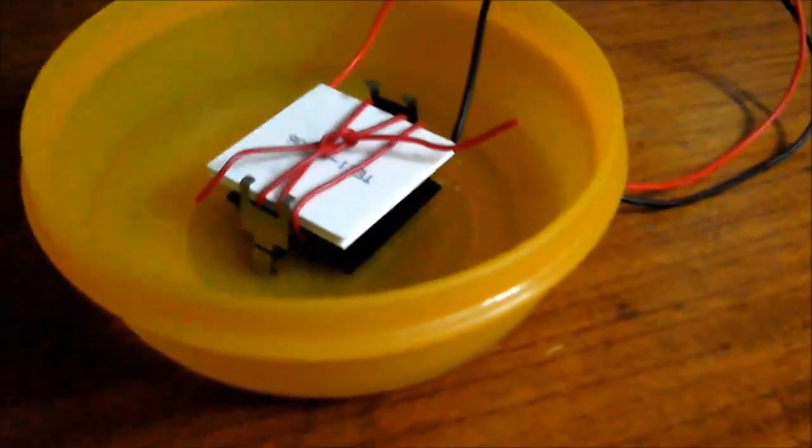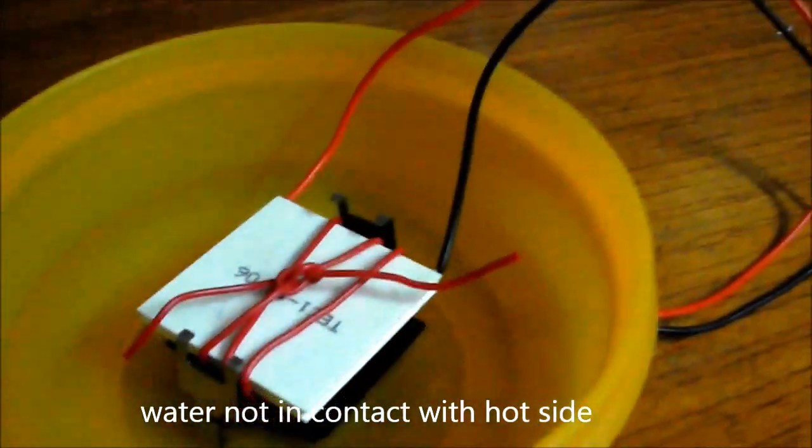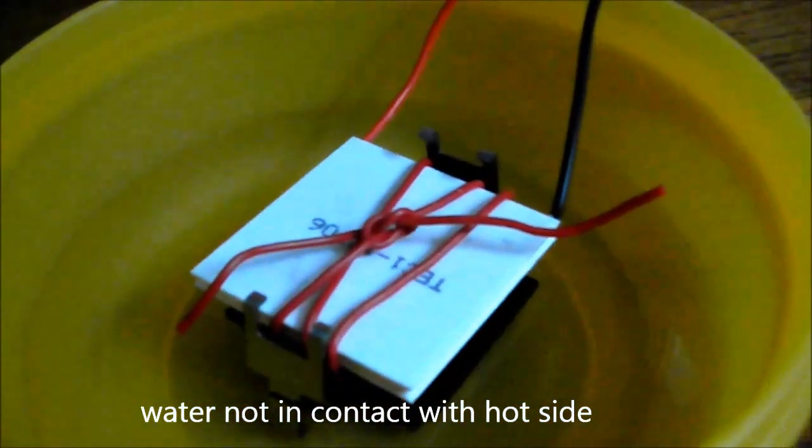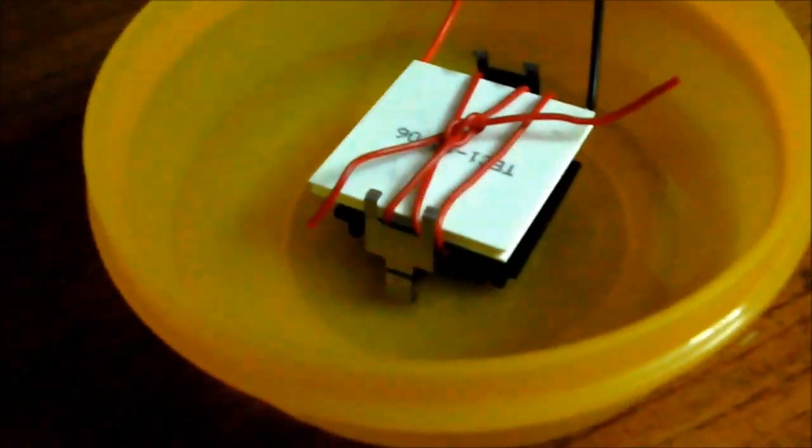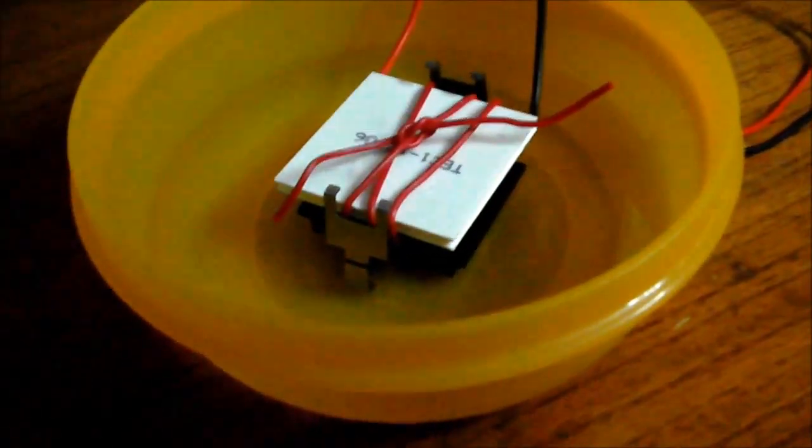You could actually let the water touch the hot side, but I don't want to risk it since this is a brand new peltier unit. It's actually better not to let the water touch the peltier unit. The point here being I've connected the heat sink to the hot surface so that I can reject the heat from the hotter surface more effectively.